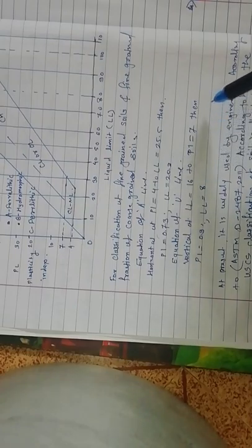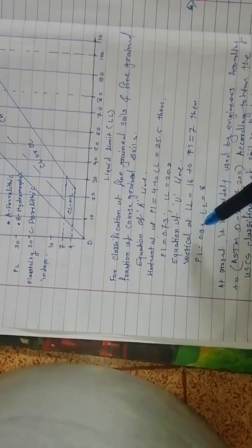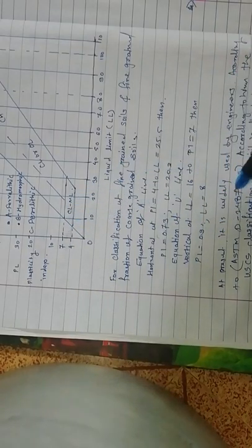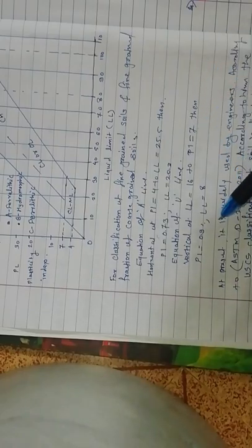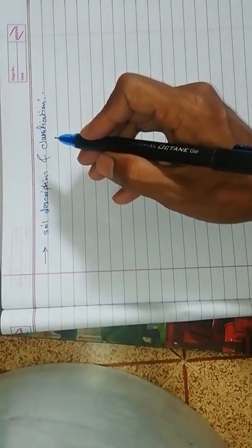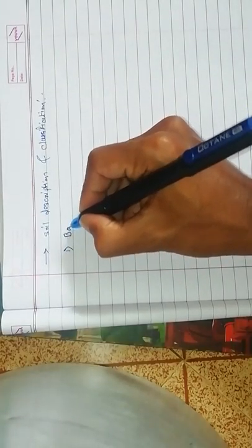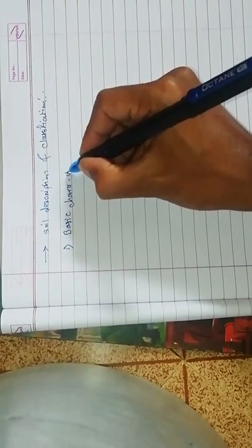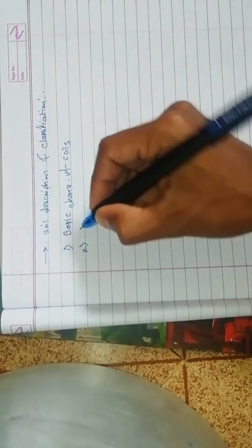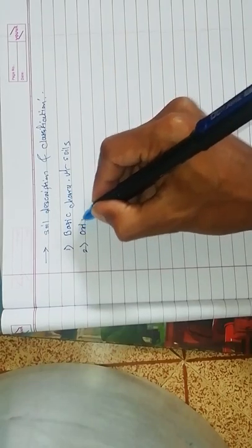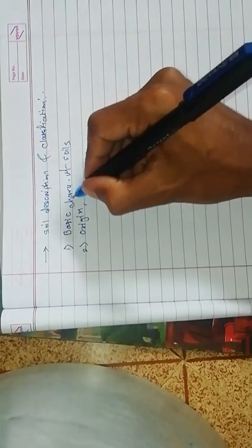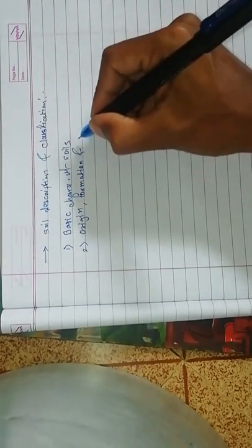The U-line is vertical at liquid limit 16 up to plasticity index 7, then follows: plasticity index equals 0.9 times (liquid limit minus 8). Now, soil description and classification is done on the basis of: first, basic characteristics of soils; second, origin, formation, and mineralogy.